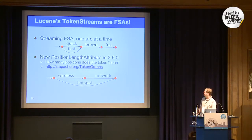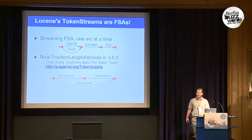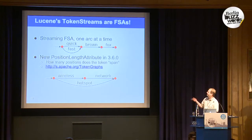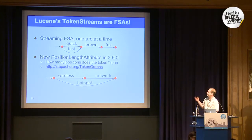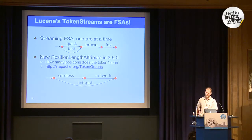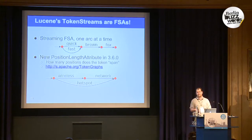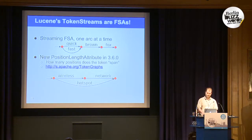Finally, if you've used Lucene's analyzers and the analysis API, this is actually a finite state machine too. Here are some simple examples with synonyms — 'quick' and 'fast' are synonyms, so this is what your analysis chain looks like. We've extended it recently so that, in this case, 'wireless network' and 'hotspot' are synonyms, and we have the ability to say that 'hotspot' spans two different terms. That's fairly new and there are some important use cases for it.